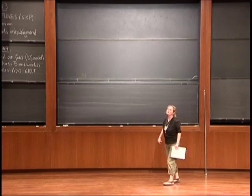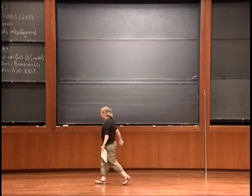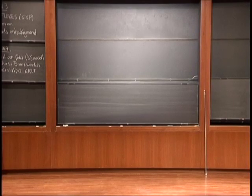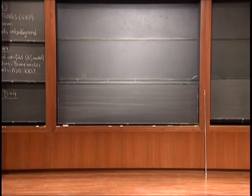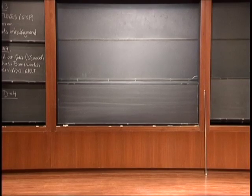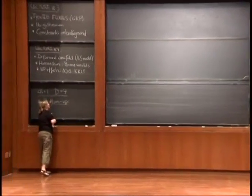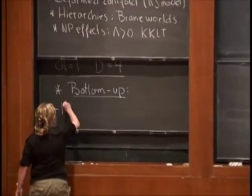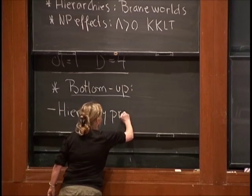Let me start by giving you some more motivation of why a string theorist is interested precisely in N equal to 1, D equal to 4. String theorists are interested in N=1, D=4 for precisely the same reasons as phenomenologists are. Let me call this the bottom-up approach. There are many nice things that supersymmetry can solve — and I'm sure Nima may have taught you many of these motivations. Supersymmetry provides a solution to the hierarchy problem: why the Higgs mass is so much smaller than the Planck mass.